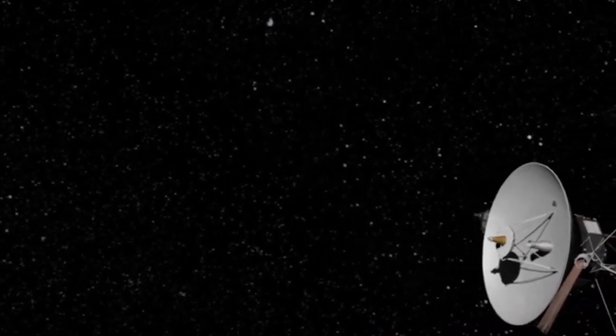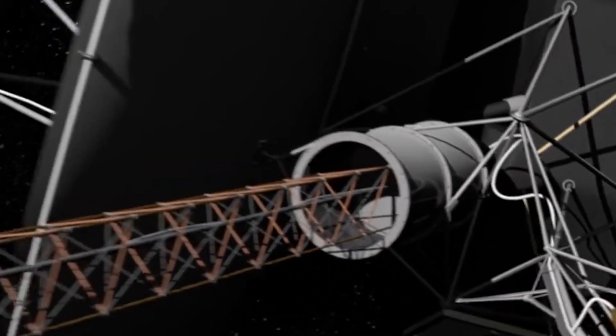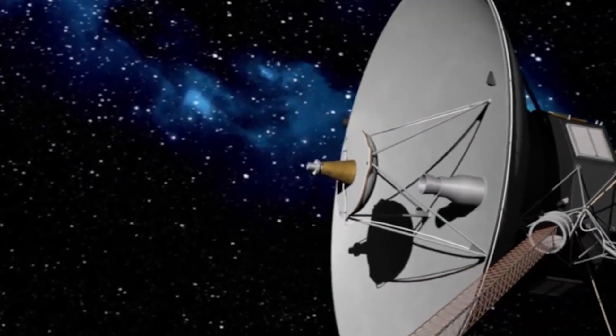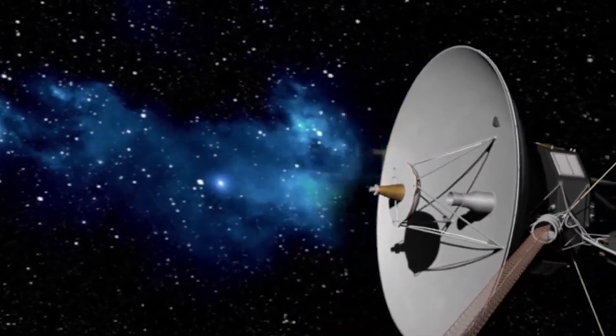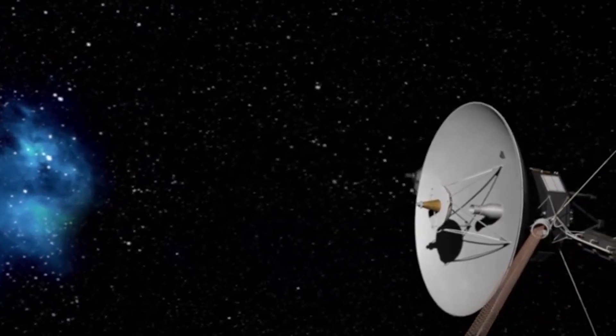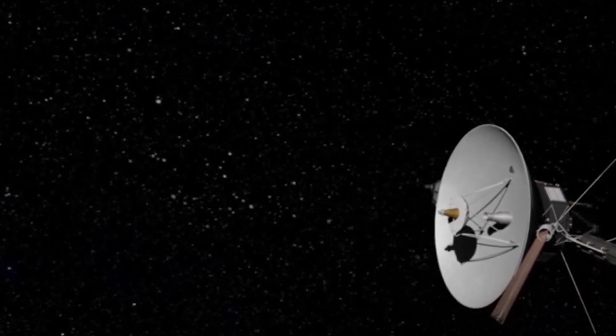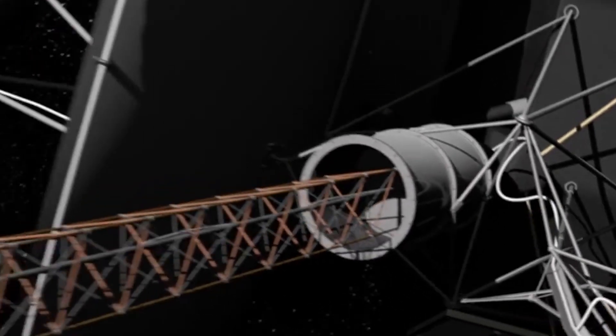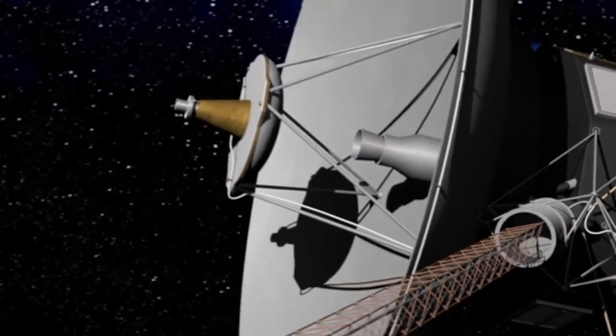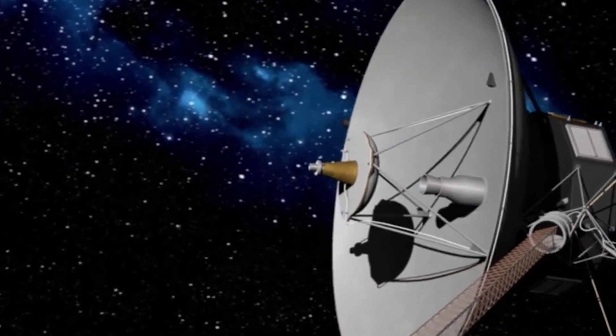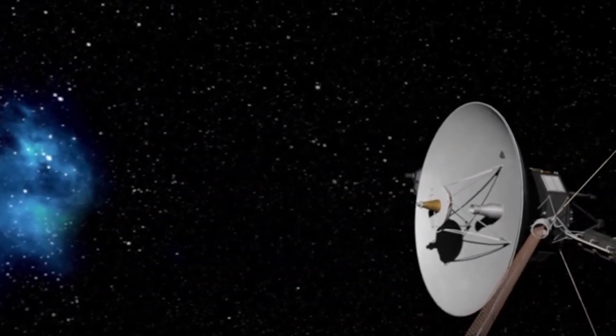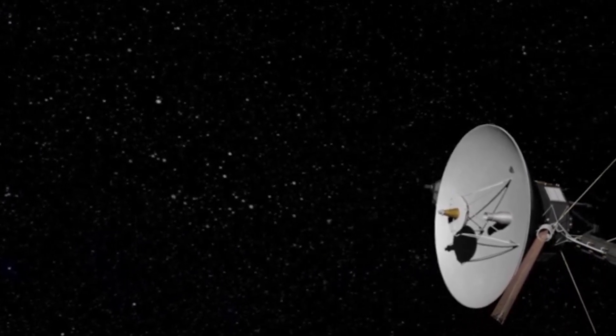And still, there is triumph in its fate, for Voyager will not die in the way we think of death. It will simply shift into a new role, from explorer to relic, from a tool of science to a symbol of endurance. It will continue its endless journey around the center of the Milky Way, completing one galactic orbit every 225 million years. Across that incomprehensible span of time, civilizations may rise and fall, stars may be born and extinguished, entire planets may form and vanish, and Voyager will still be drifting silently, untouched by all of it.